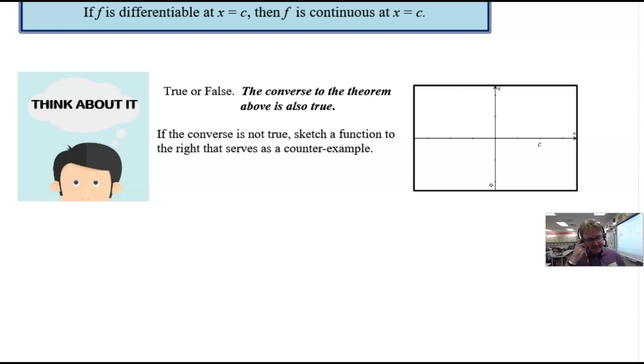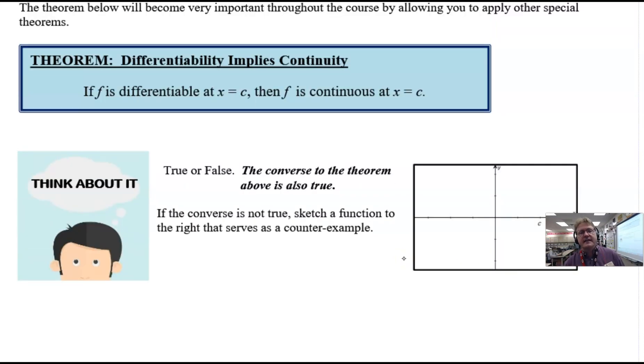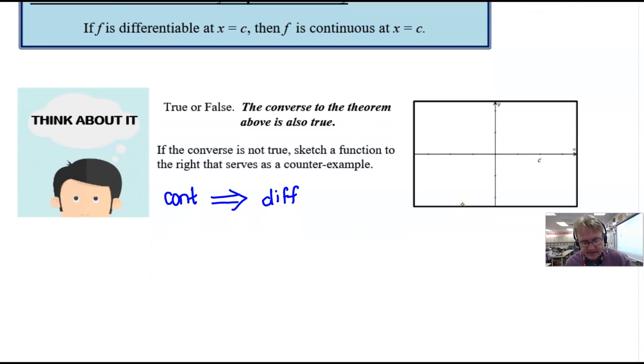If you read a little further, it says if the converse is not true, sketch a function to the right that serves as a counter-example. Basically, they want you to draw something that's continuous. If a function is continuous, does it mean it has to be differentiable? In other words, does continuity imply differentiability? If we try to draw some kind of continuous function, we notice you could draw something that's continuous, and then all of a sudden you get to c and you could do a variety of things—maybe you have a sharp turn. Yes, this thing is continuous that I just sketched, but it's certainly not going to be differentiable at that sharp turn. Just because you're continuous doesn't imply differentiability, so that is not a true statement, and that's why that converse is false.